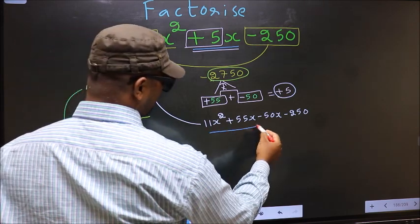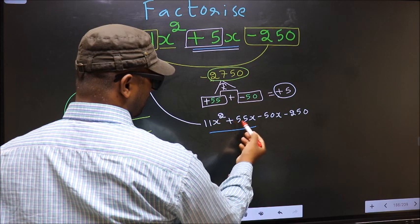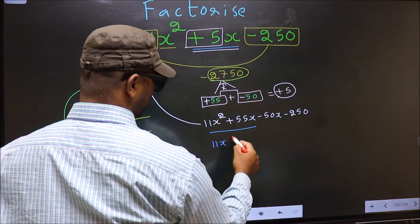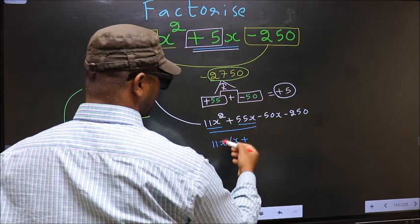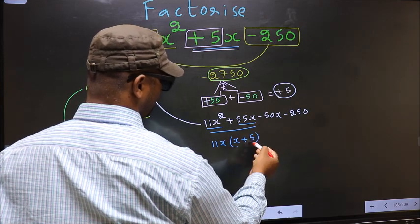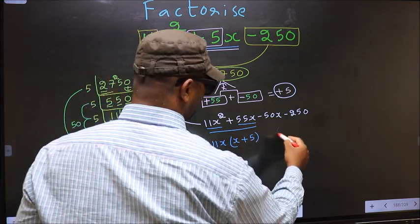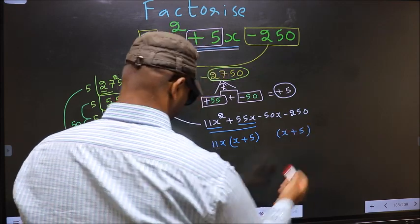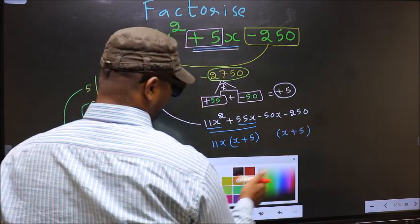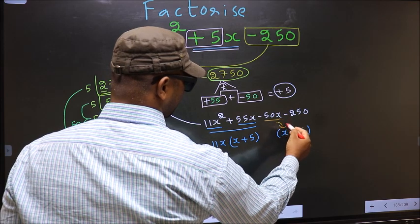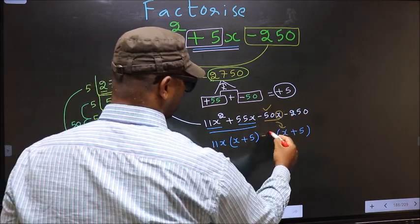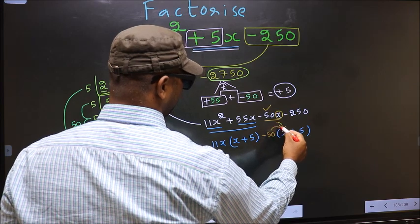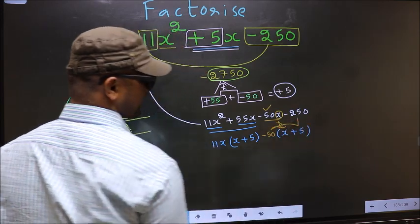Next, now from these 2 terms what can be taken out common is 11x. So here you get x+5 (from this 11x out so you get 5). Now whatever you got here, here also you should get the same thing. From this x has gone inside so outside you get -50. Even if you multiply and check still you get the same thing.